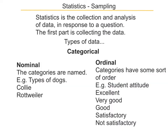Within categorical data, there are two main sorts: nominal and ordinal. Ordinal, if you think about it, sounds like order. So in ordinal data there is some sort of order. In nominal data, there are just categories.